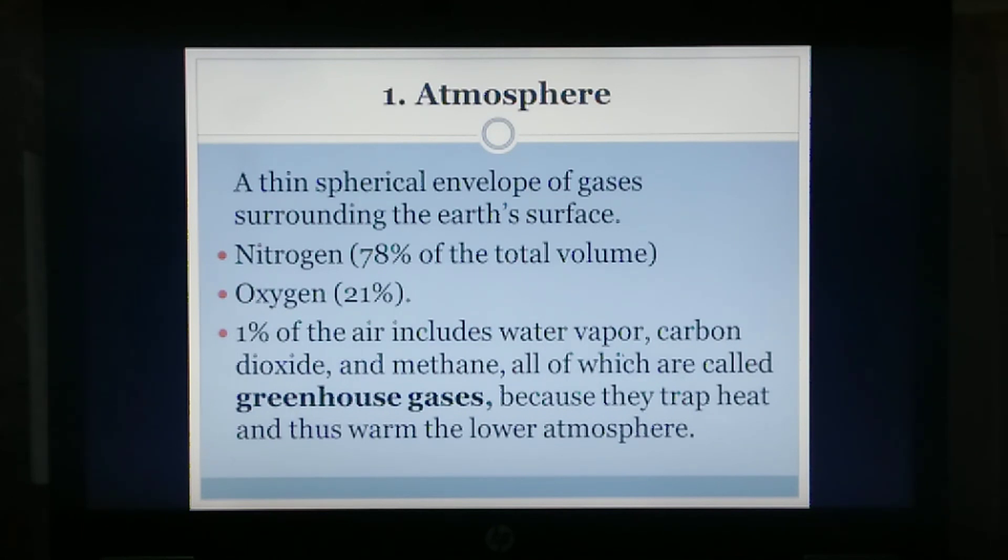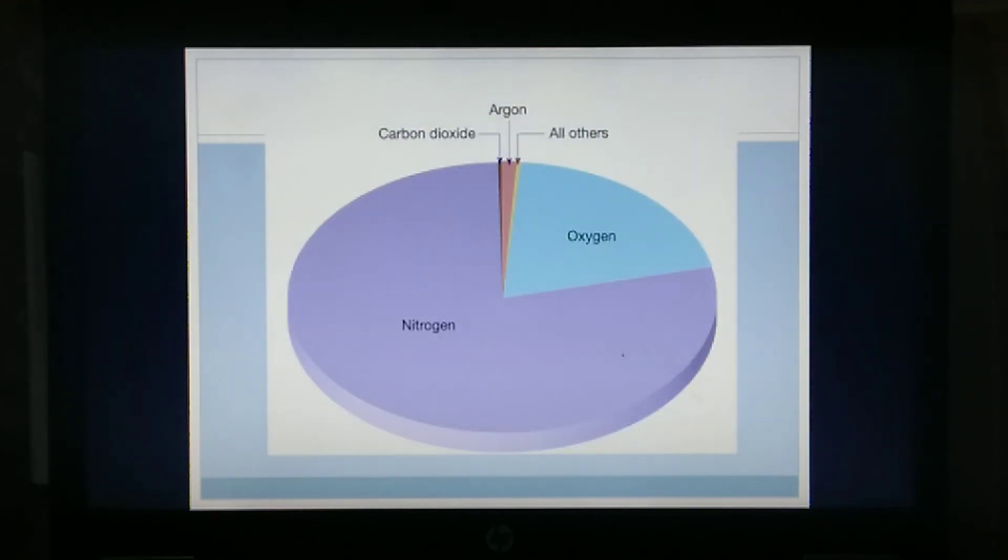All of which are called greenhouse gases because they trap heat and thus warm the lower atmosphere. By mole fraction, dry air contains 78.08% nitrogen, 20.95% oxygen, 0.93% argon, 0.04% carbon dioxide, and small amounts of other gases. Air also contains a variable amount of water vapor, on average around 1% at sea level and 0.4% over the entire atmosphere.